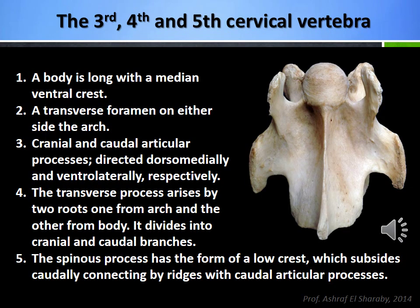Characteristic features of the typical cervical vertebrae C3, C4 and C5 include: 1. A long body with a median ventral crest. 2. A transverse foramen on either side of the arch. 3. Cranial and caudal articular processes directed dorsomedially and ventrolaterally, respectively. 4. The transverse process arises by two roots, one from the arch and the other from the body, dividing into cranial and caudal branches. 5. The spinous process has the form of a low crest which subsides caudally, connecting by ridges with the caudal articular processes.